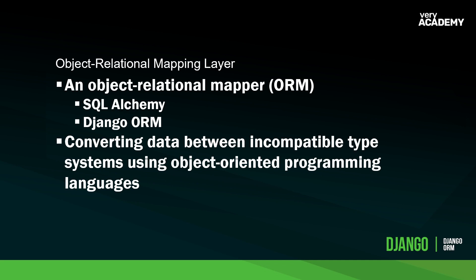So what exactly does the ORM provide us as developers? The Wikipedia description is: converting data between incompatible type systems using object-oriented programming languages. This pretty much sums up what an ORM does, but it doesn't make it very clear, so let's drill down into this.